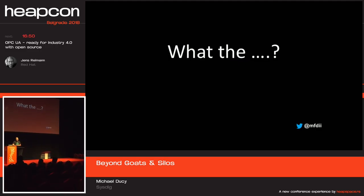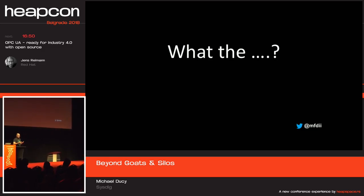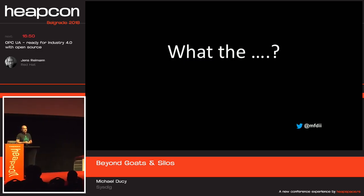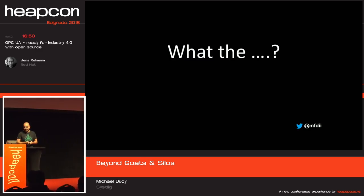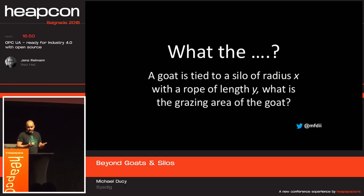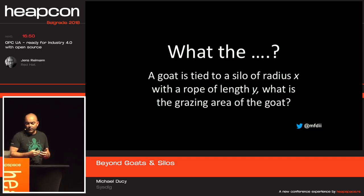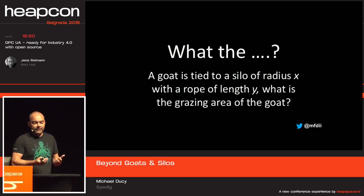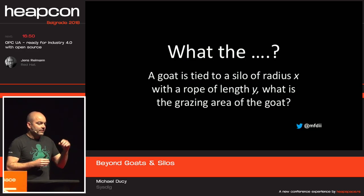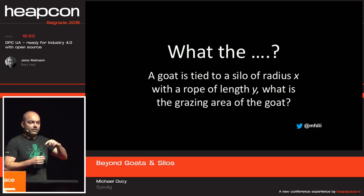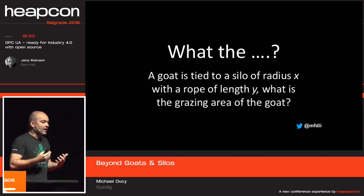You're probably asking yourselves: what the hell are we about to talk about? Why do we have someone up here talking about goats and how they apply to DevOps? There's a mathematical problem that says a goat is tied to a silo of radius X with a rope of length Y — what is the grazing area of the goat? Since the tether is pinned to a certain point on the silo, it's not going to make a complete circle; it's going to be an odd-shaped circle.